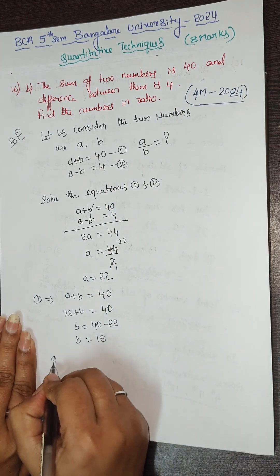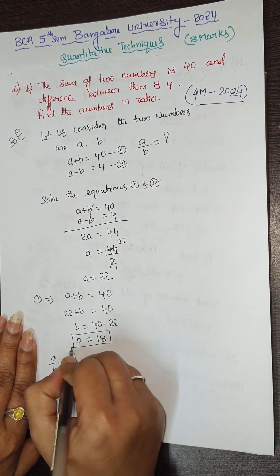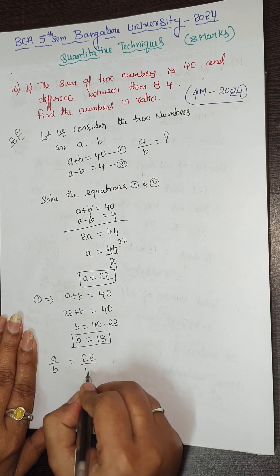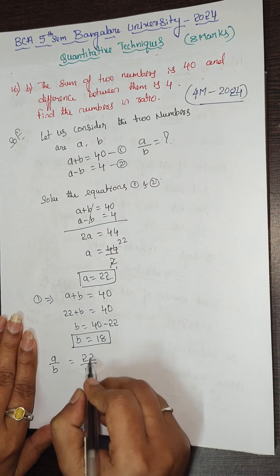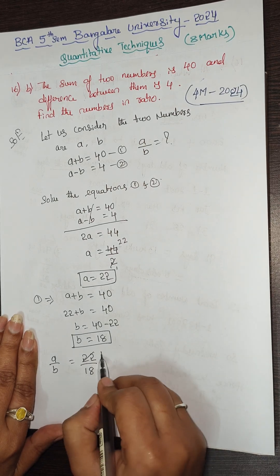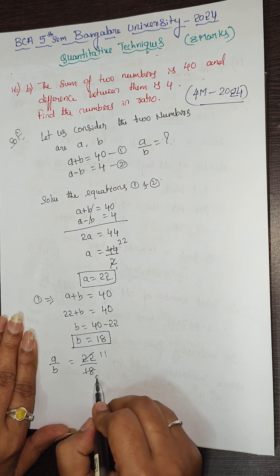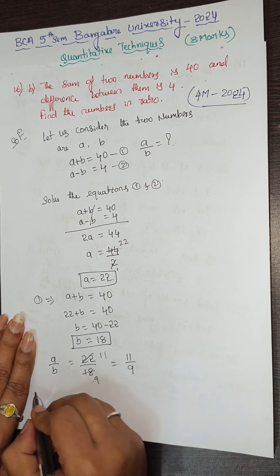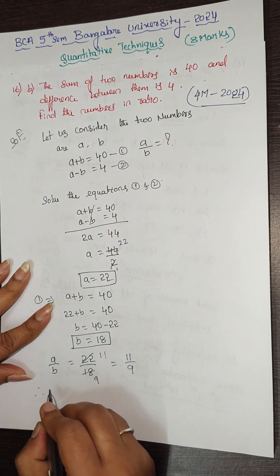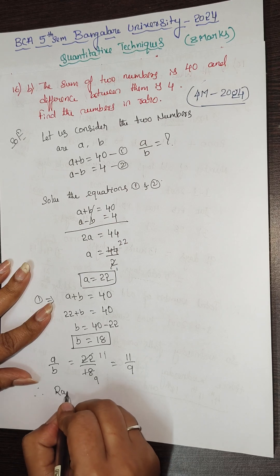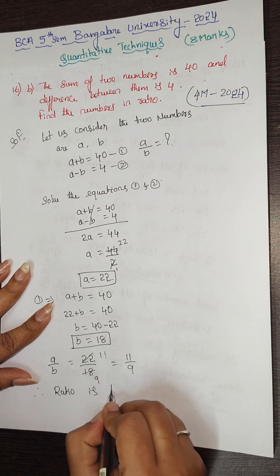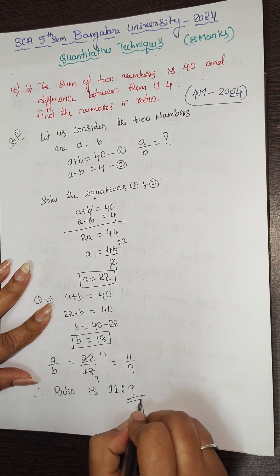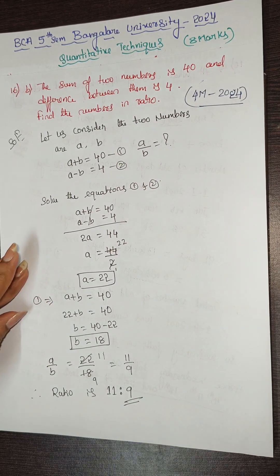Now we find the ratio: a divided by b = 22 divided by 18. Simplifying by dividing both by 2 gives 11 by 9. Therefore the ratio is 11 : 9.